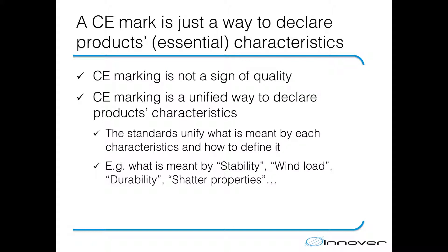In its essence, if we take all other things away, a CE marking is nothing more than a way to declare a product's essential characteristics. It is not a sign of quality — especially not a sign of good quality. This is just a unified way to declare product characteristics. A CE marking is just a listing of product characteristics that the manufacturer has determined, and nothing more.